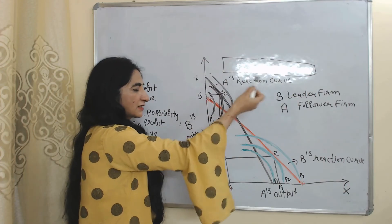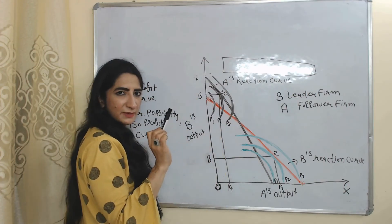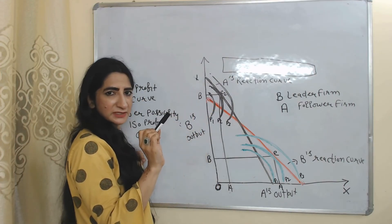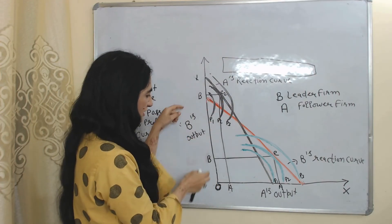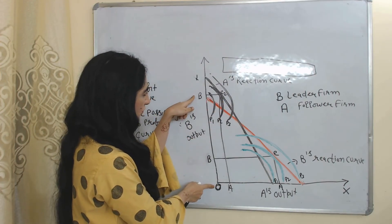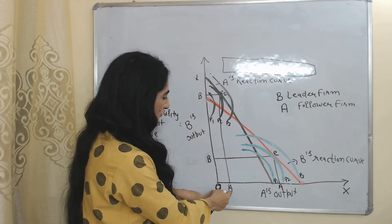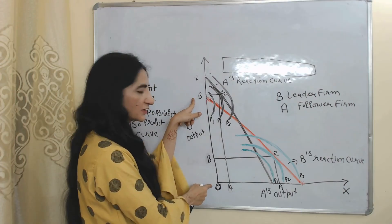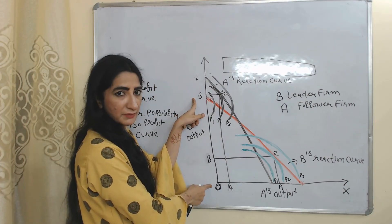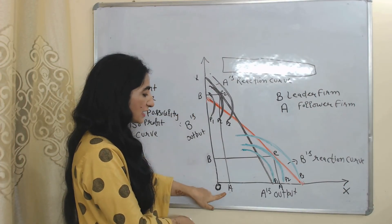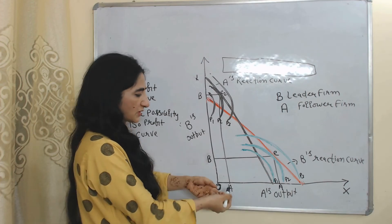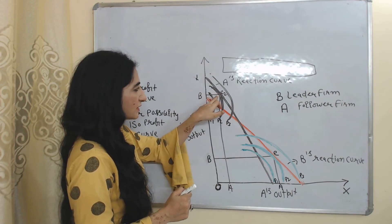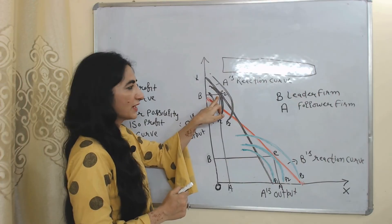At point E2, you can see the lowest point of B's isoprofit curve touches the reaction curve of A. So E2 is called the Stackelberg equilibrium point. At this point, B decides its profit-maximization output. The output of B is OB and the output of A is OA — the output of A is less compared to B, because now B is the leader firm and A is just the follower firm.